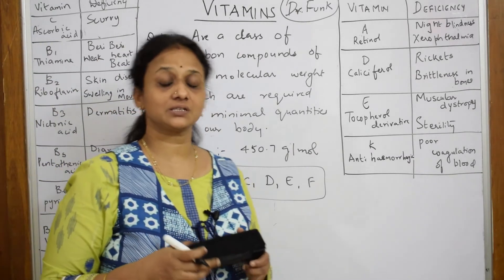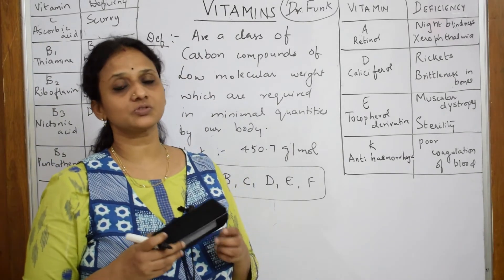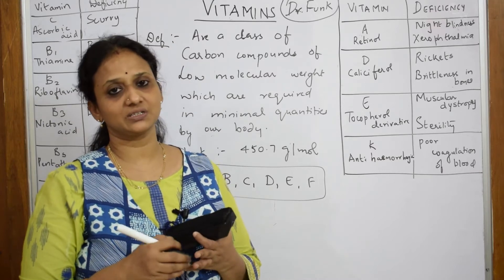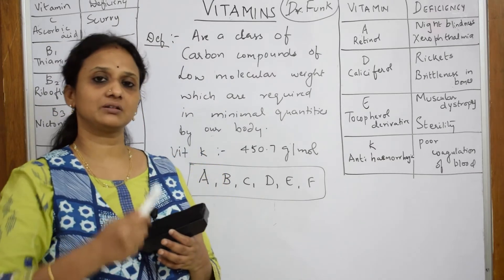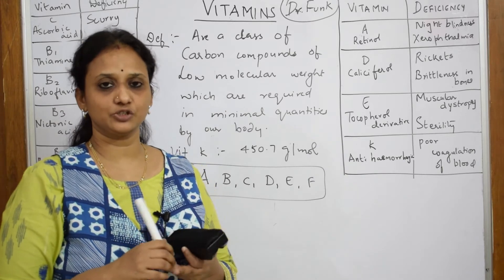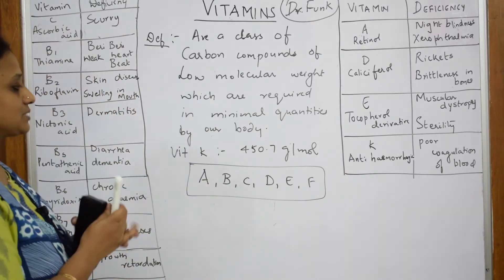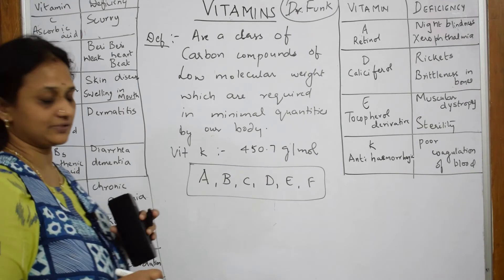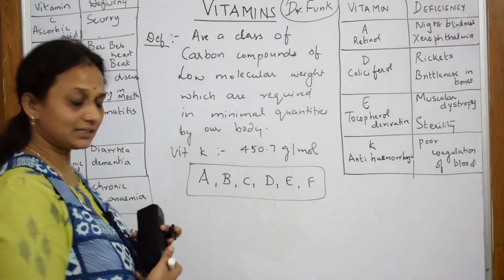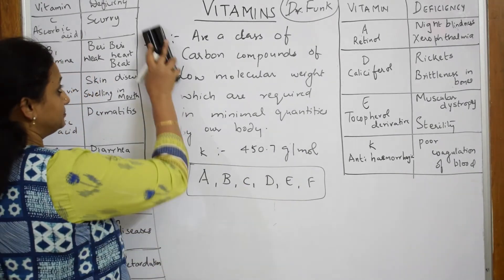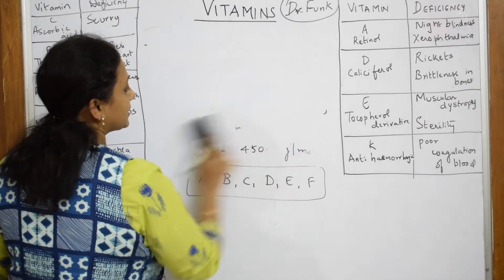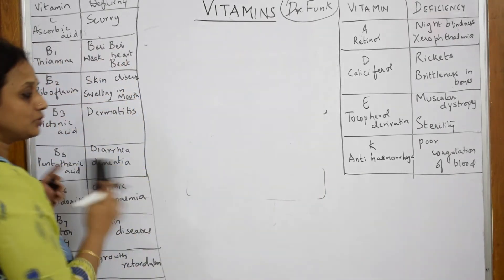Where are vitamins present? Almost all cells of the body contain minimum quantities of vitamins, and some are absorbed from the diet we consume daily. Vitamins are further classified into two categories.